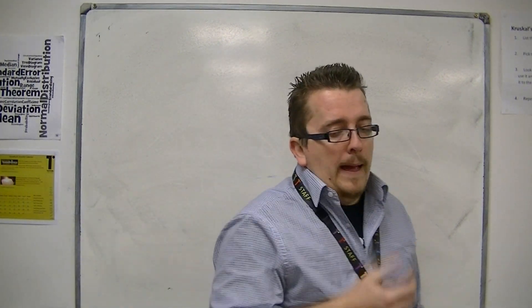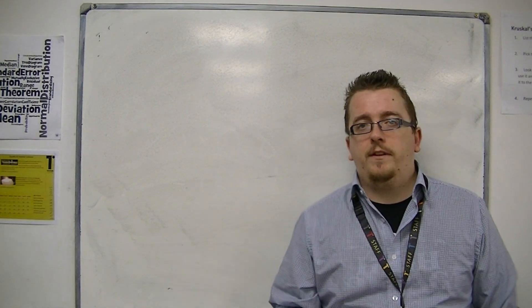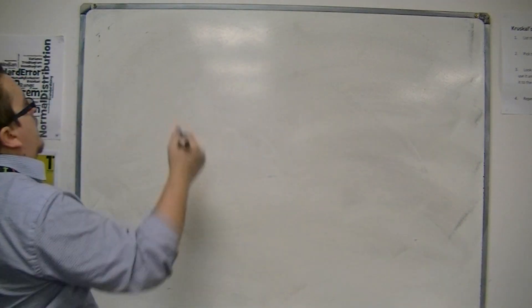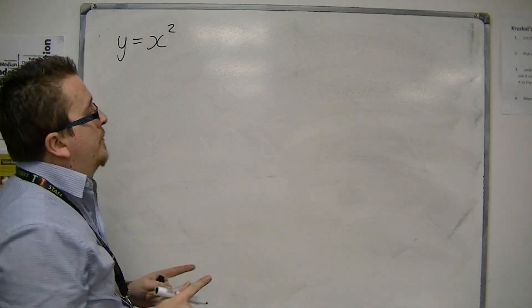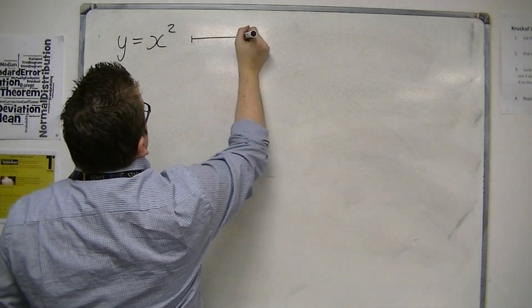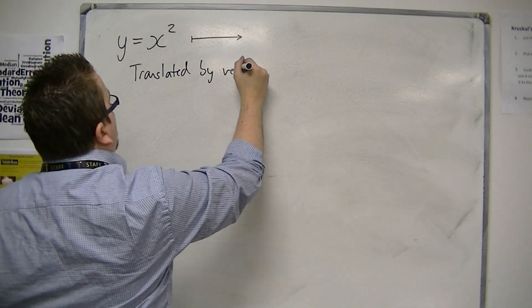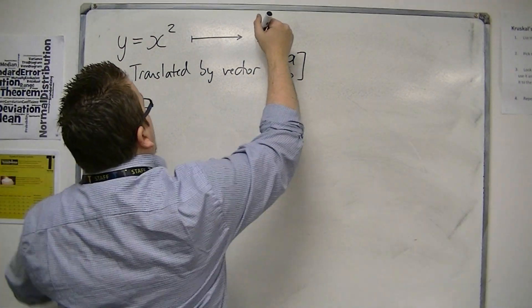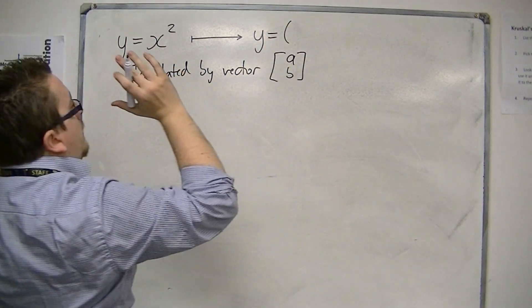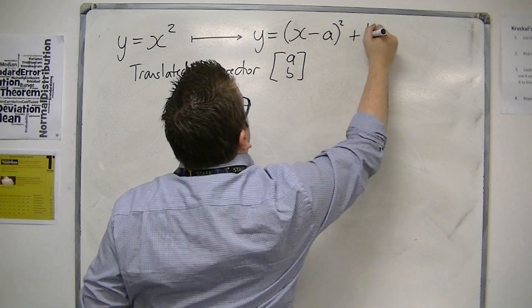In Core 1, we've already looked at how you can translate a quadratic. So if you started with the graph of y equals x squared, then if this was translated by a vector [a, b], for example, then we would see that the equation would now be y equals (x minus a) squared, plus b.